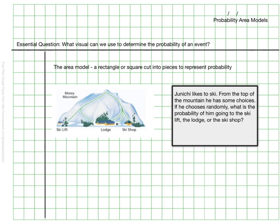Using the picture here of our mountain and the question to the side, we see that we have Janichi. He likes to ski and he has some choices. He could go down different paths, so we're trying to figure out the probability if I'm going to the ski lift, the lodge, or the shop, and we're going to use an area model to display these options and to see his probability.